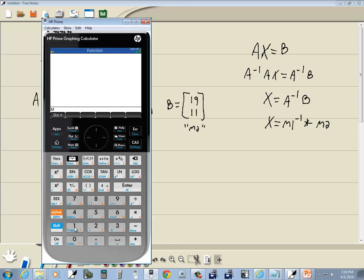Okay, 1, and then I'll do my inverse, which is shift divide. Now, I'll do times, and then I'm going to do M2. So I'll do alpha plus negative, and then put 2, and then press enter.